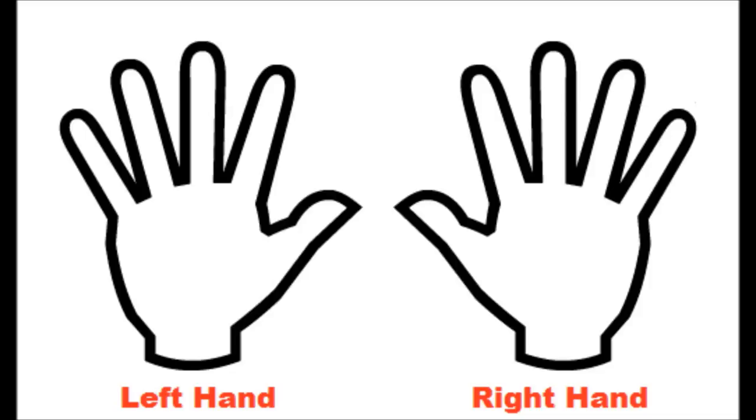On both the right and left hand, the thumb is finger 1, the index finger is finger 2, the middle finger is finger 3, the ring finger is finger 4, and your little or pinky finger is finger 5.